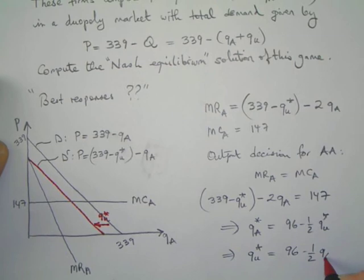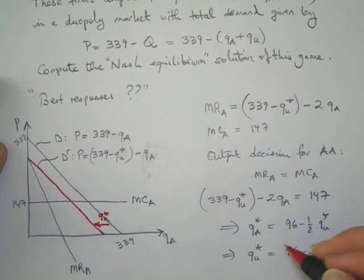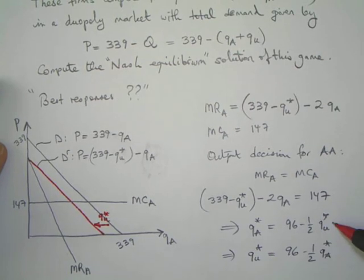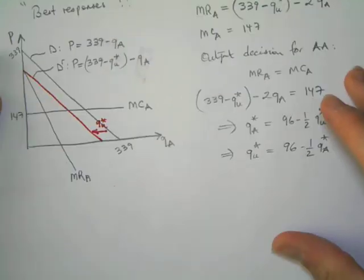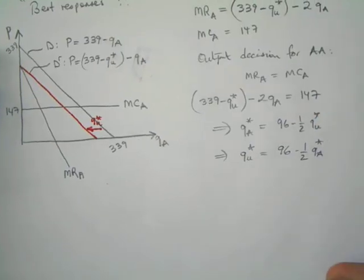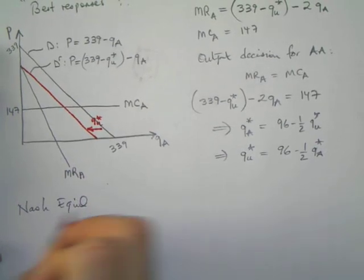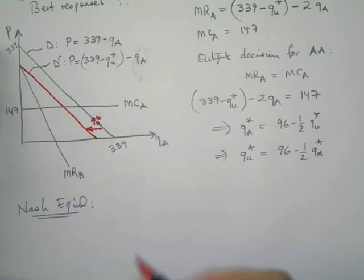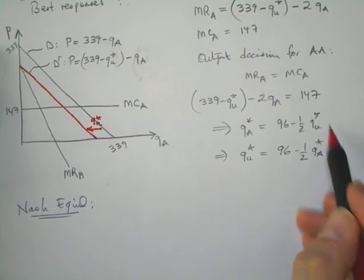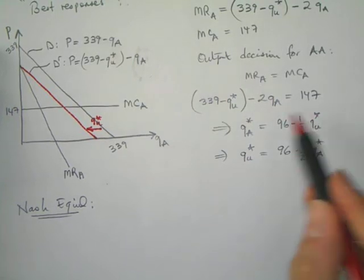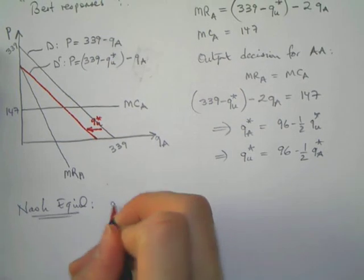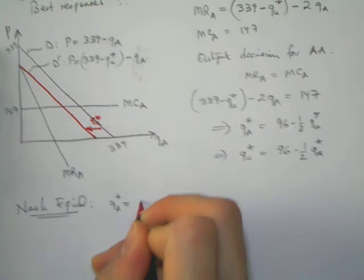If my rival chooses to produce anything above 192 units, my best choice is to produce nothing. In a similar fashion, it's possible to find the optimal strategy of United Airlines based on the strategy by American Airlines. These two are the best responses for American Airlines and United Airlines.